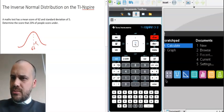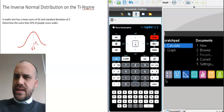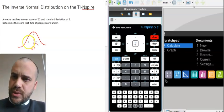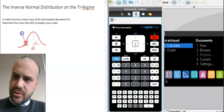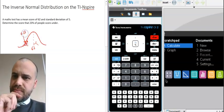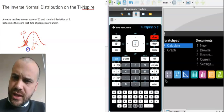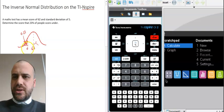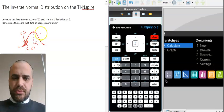It says determine the score that 23% of people score under. So 23%, that's like about here. This shaded area here, that's going to be 0.23. And we need to know what this value is. I'll call that value C. We use C quite a bit for this kind of thing. Now from here we should just be able to use our calculator to be able to determine this question.